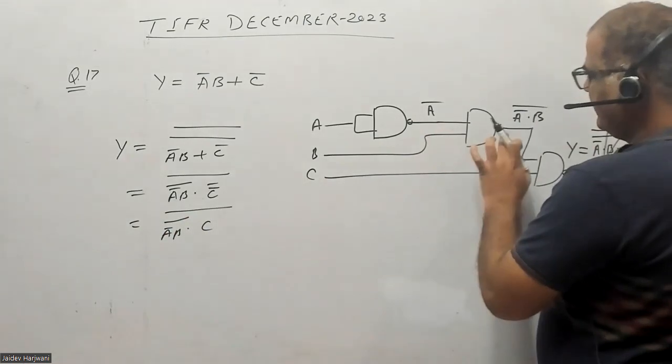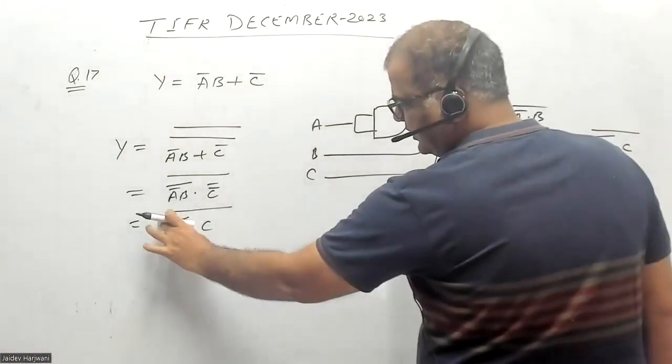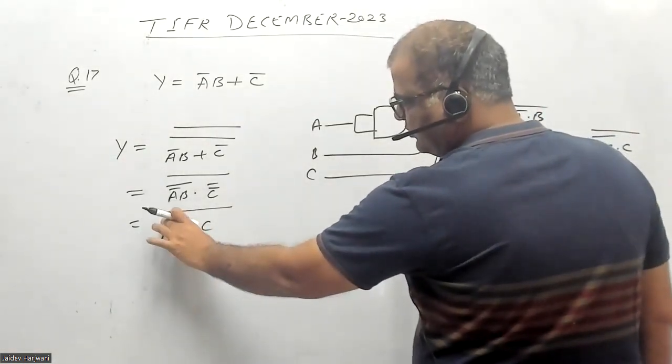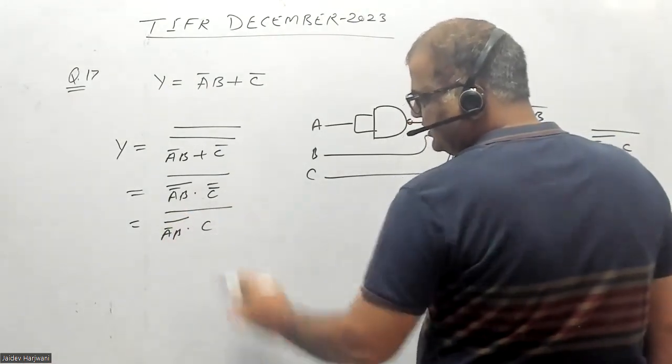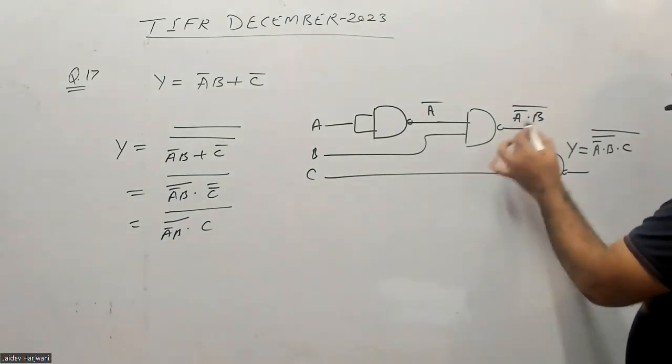Now this expression and C will go to another NAND gate. These two will go to another NAND gate to get the required expression.